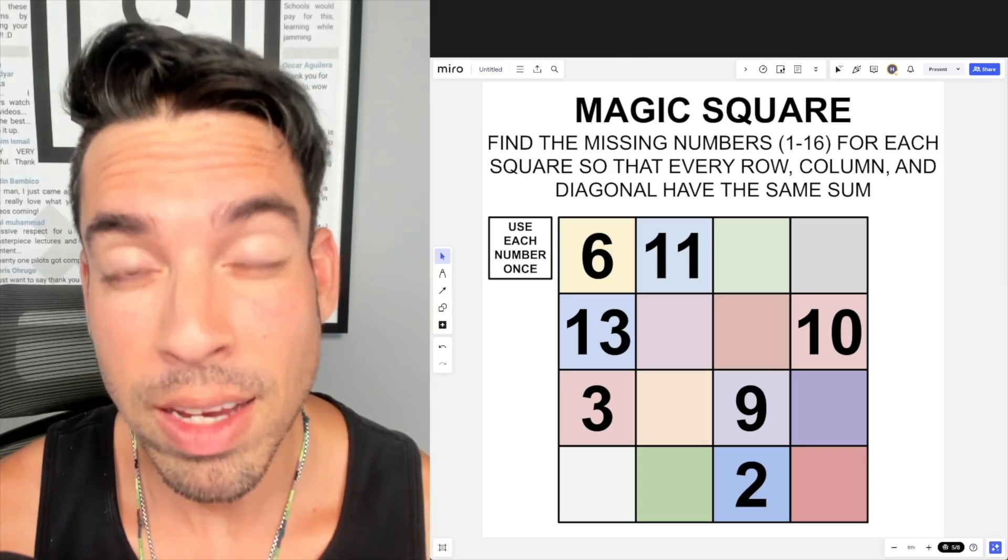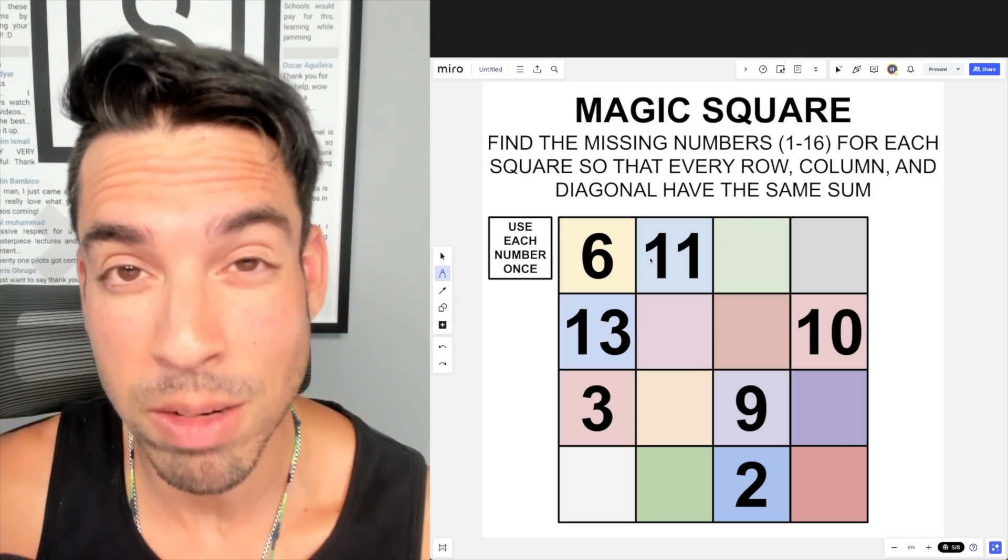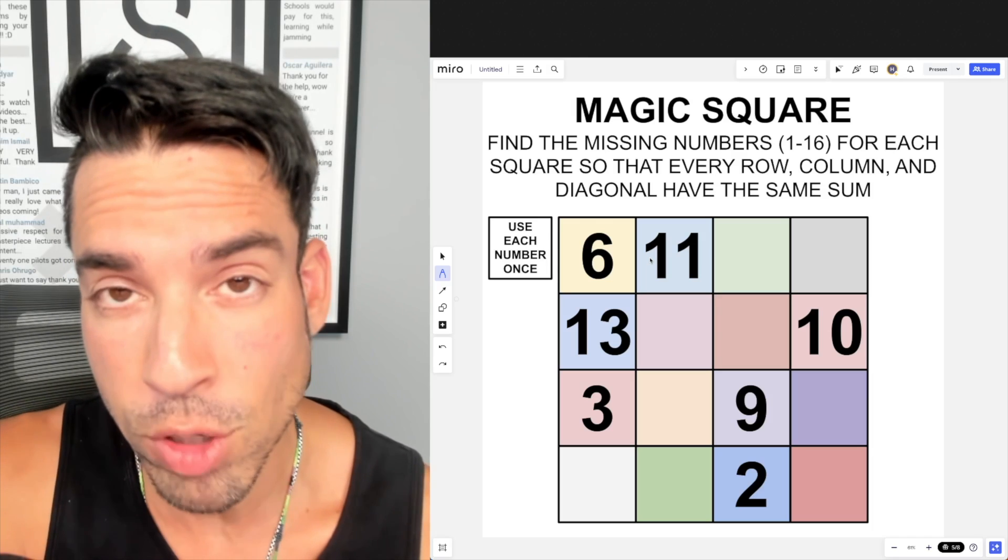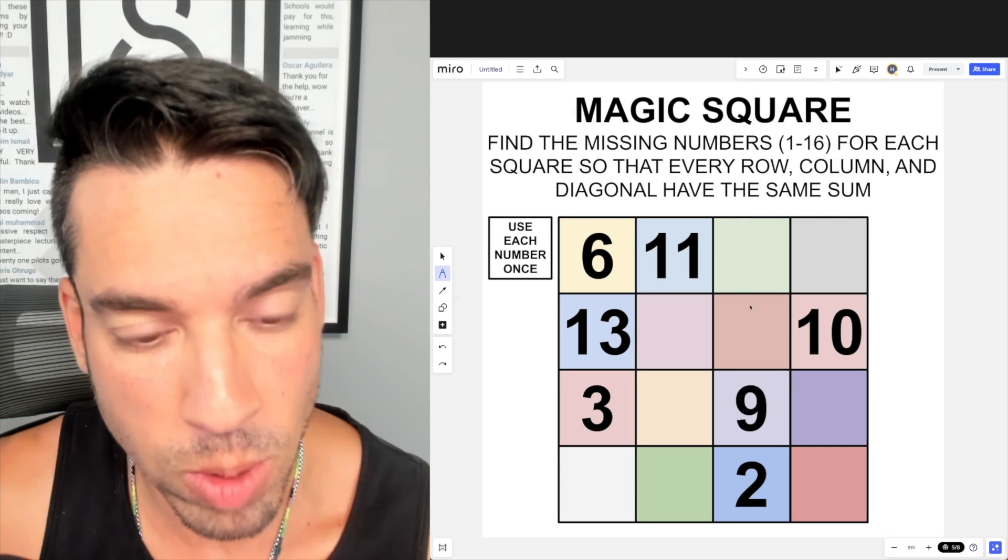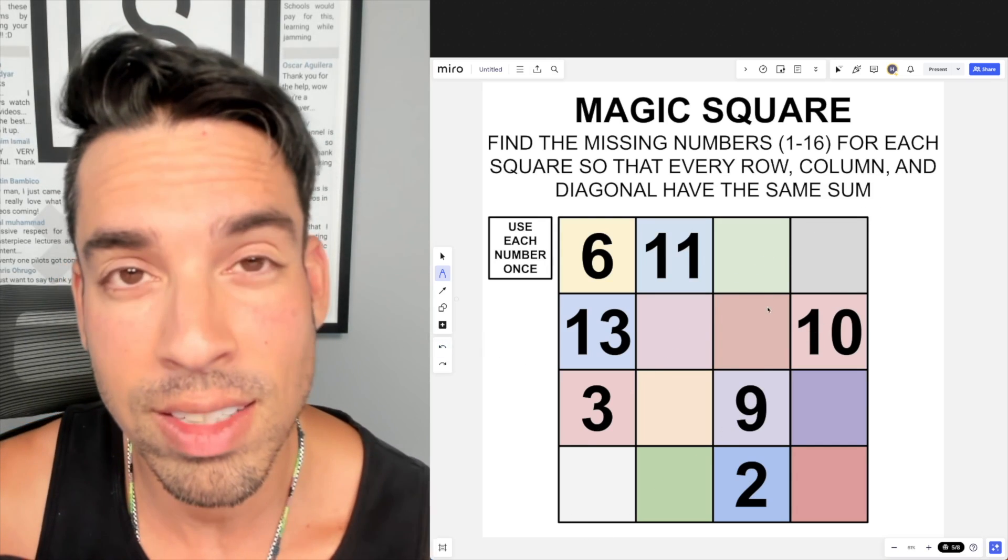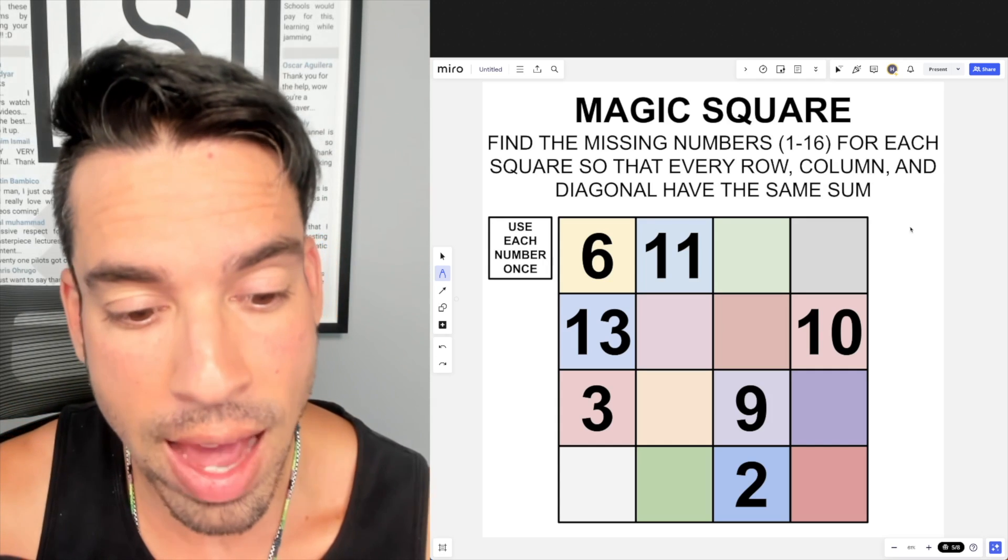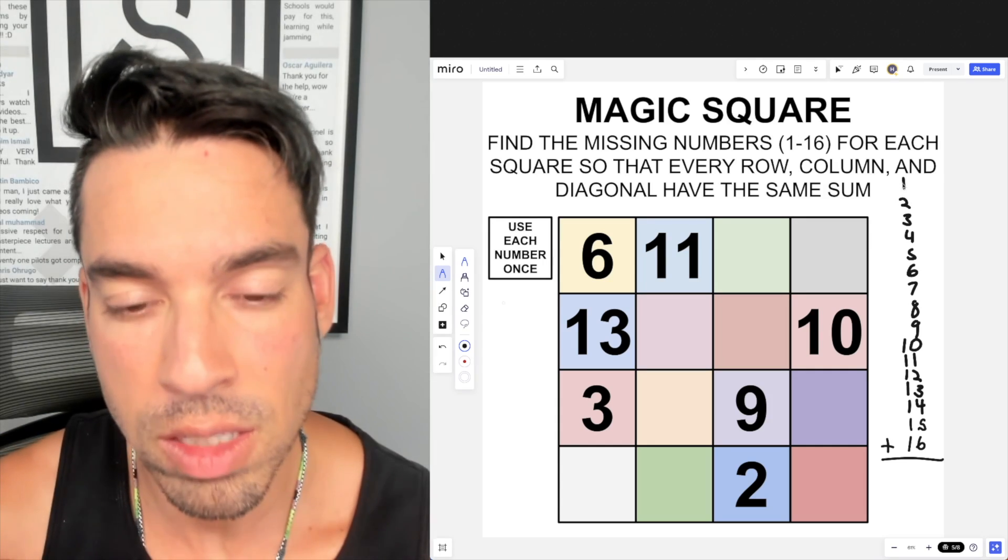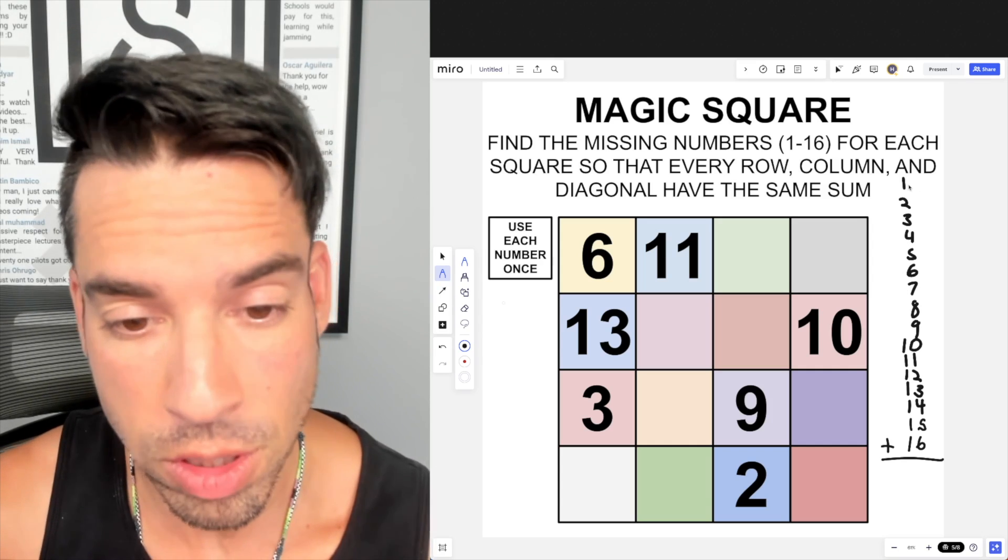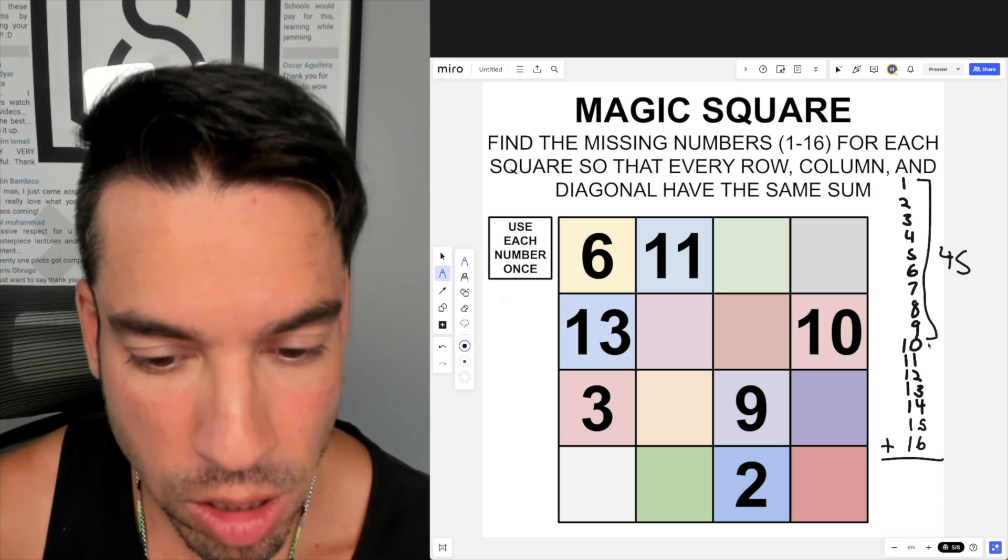When you're ready, hit play and I'll give you the explanation. So the first thing we want to do here is figure out what that sum is going to be that's consistent throughout every row, column, and diagonal. If you'll notice, every row, column, and diagonal—and when I say diagonal I mean just the long diagonals—is going to consist of four numbers. So the way to figure out what these sums are going to be is we're going to add up all the numbers 1 through 16 and divide by 4. So as we line all these up, now we can add them together.